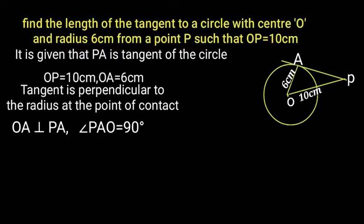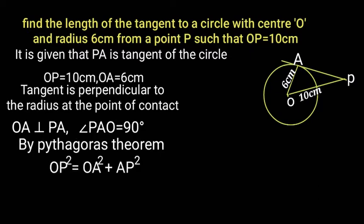By Pythagoras theorem, OP square is equal to OA square plus AP square. PA square is equal to OP square minus OA square.